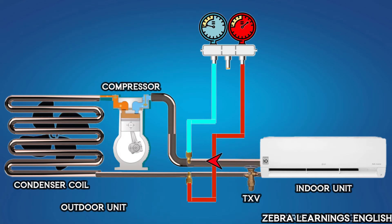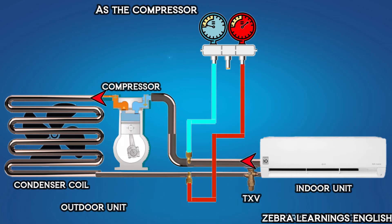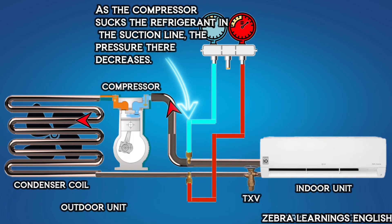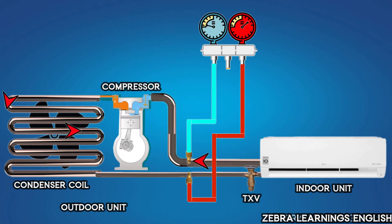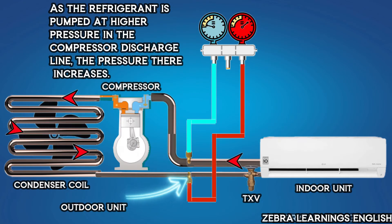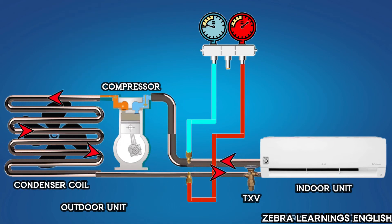When the unit starts, the compressor sucks the refrigerant in the suction line, and the pressure there decreases. In the discharge line, the pressure increases as the compressor discharges the refrigerant.